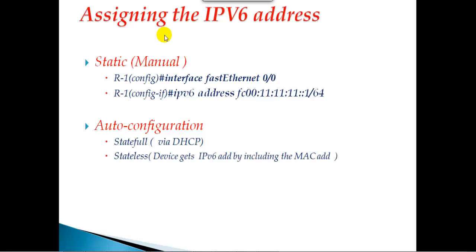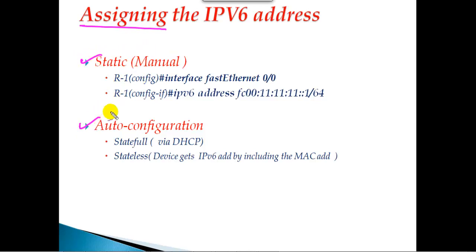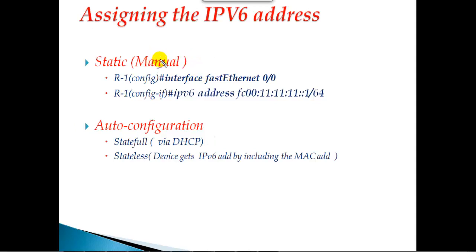In this section we'll see how to configure an IPv6 address on a router interface. Just like IPv4, we can assign the IP address either through manual configuration, which we call static, or we can use auto configuration. With auto configuration the device gets the IPv6 address assigned automatically, whereas with static we go to the interface and assign the IPv6 address manually.